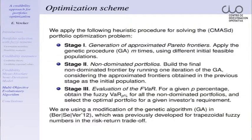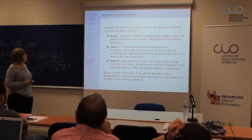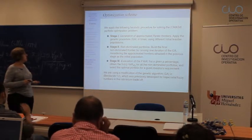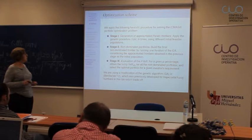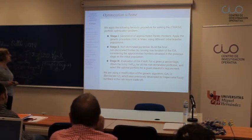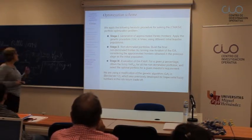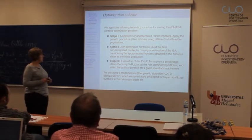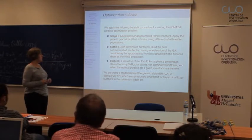We use a modification of a genetic algorithm previously introduced for LR-fuzzy numbers, with three stages. First, we generate M approximate Pareto frontiers using different initial feasible populations. We then build the final non-dominated frontier using an intensification step of the genetic algorithm. For the final Pareto frontiers, we evaluate the fuzzy value at risk of each non-dominated portfolio — usually at 5%, the fuzzy VaR at 5% — and we decide the best portfolio using different upper bounds of this value.